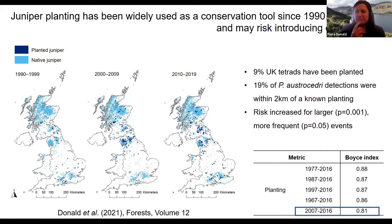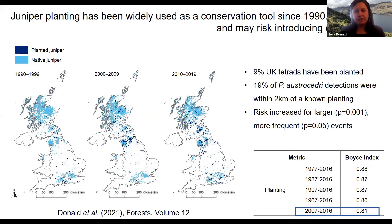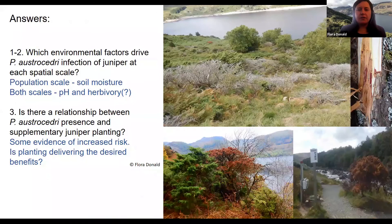When I tried different temporal slices of planting locations in the national model, it didn't make much difference until I only included information from the past decade — at that point model performance dipped. Including all historical planting events better predicts the current distribution of Phytophthora austrasidri. I think this could foreshadow that we're going to see a lot more outbreaks in the coming decades if there's a lag between the pathogen being introduced and being detected through foliage symptoms.